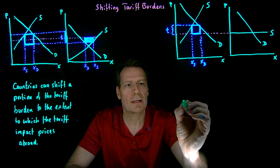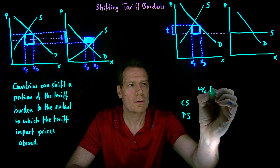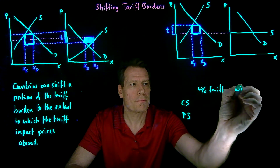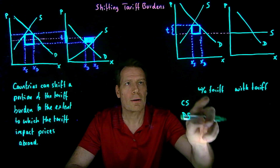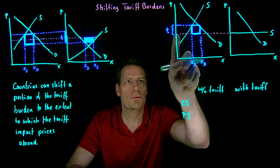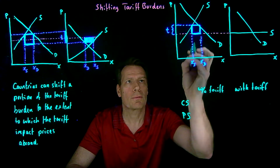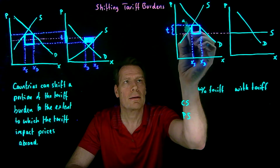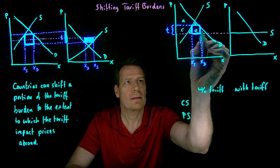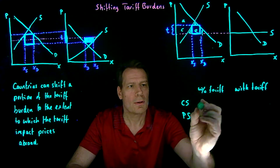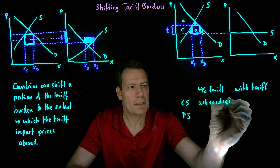We can see that by looking at consumer surplus and producer surplus without the tariff and with the tariff. Without the tariff, the price is this lower magenta price, so consumers pay that price and get the surplus above it up to the demand curve — that would be areas A, B, C, D, E, and F, so A plus B plus C plus D plus E plus F.